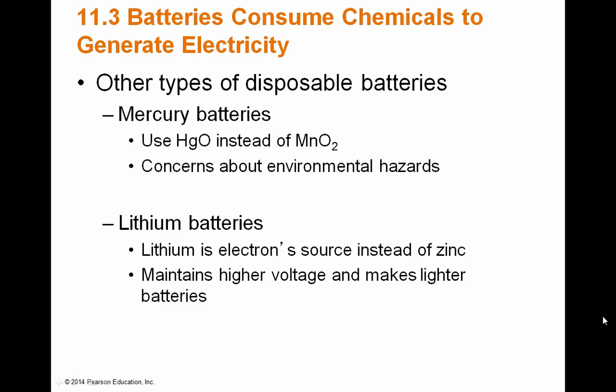Other types of disposable batteries are mercury batteries and lithium batteries. Mercury batteries are no longer really used because of environmental hazards. Lithium batteries use lithium instead of zinc as the outer part of the battery, which produces higher voltage and lighter batteries — some of the fancier batteries are made this way, though they're still not rechargeable. Zinc is cheap, stable, and good enough for most applications, while lithium is increasingly being used for rechargeable batteries.